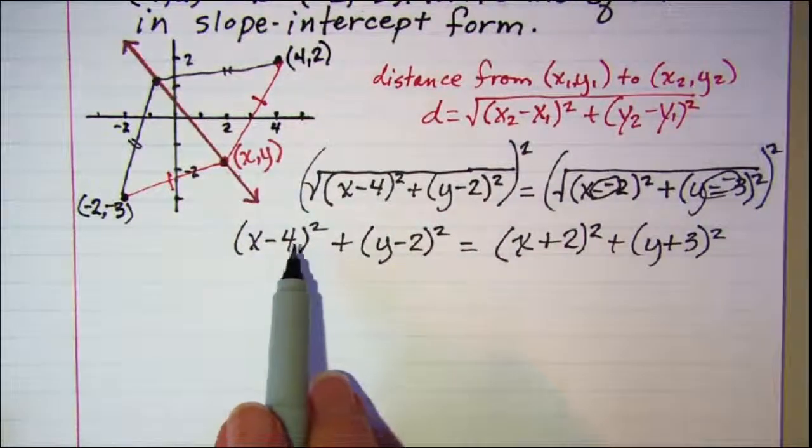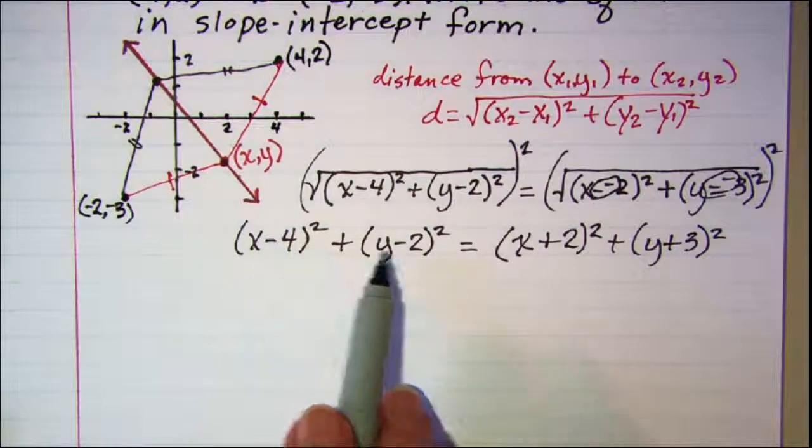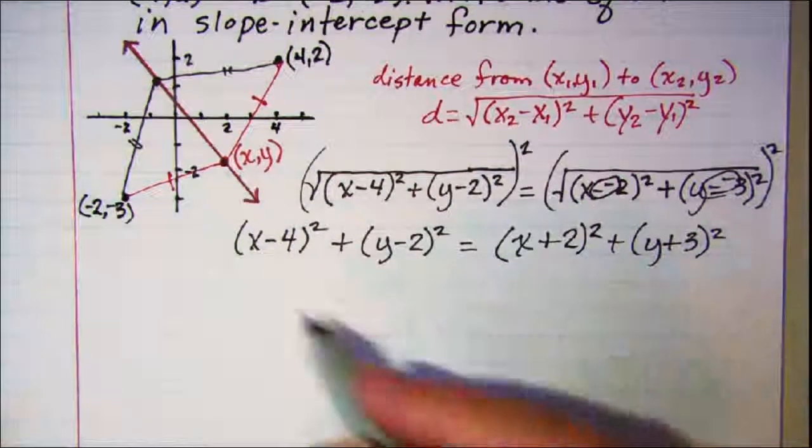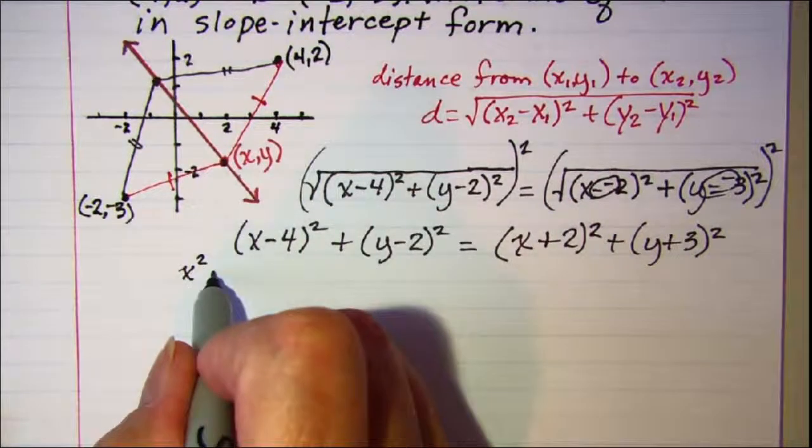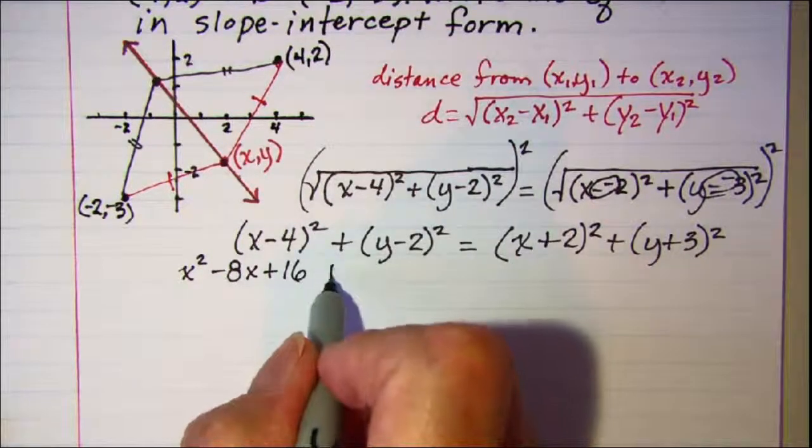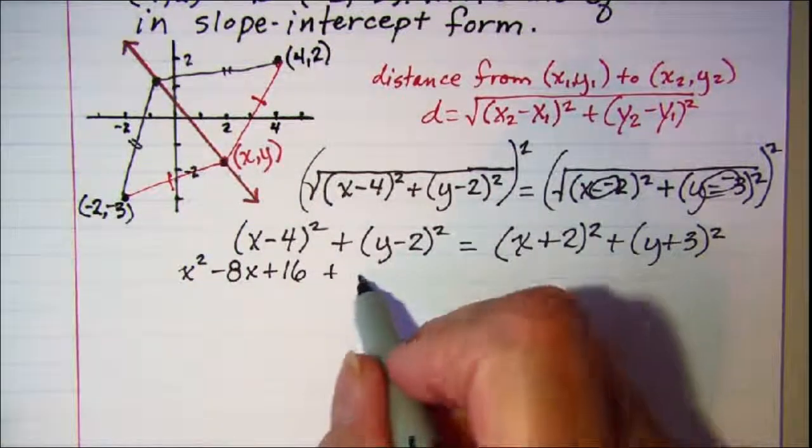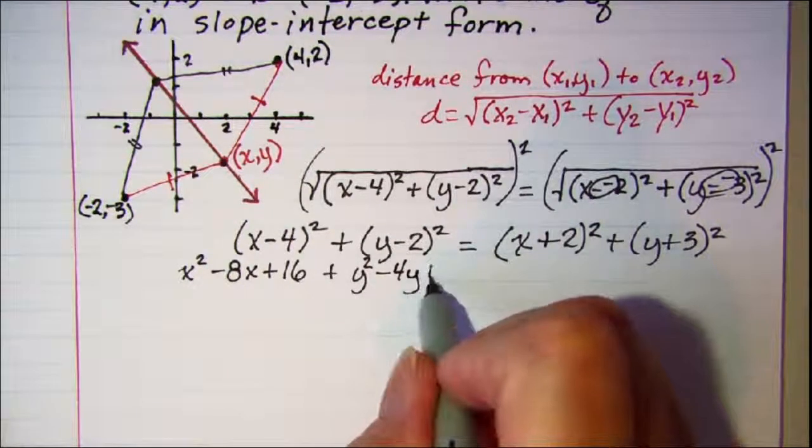Alright, the next thing that we're going to need to do is use FOIL to multiply each of these binomials out. This first one will be x² - 8x + 16.